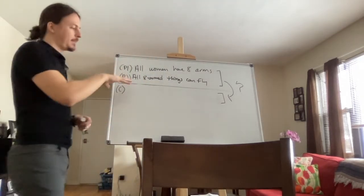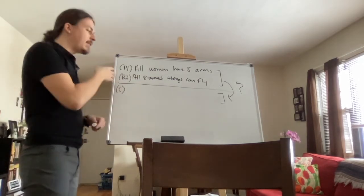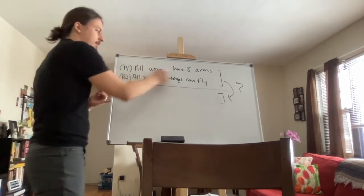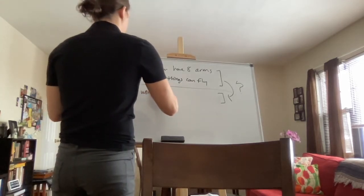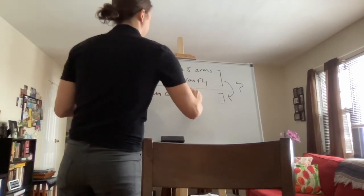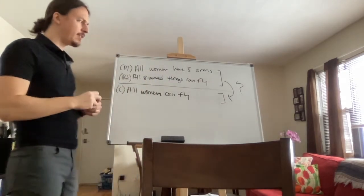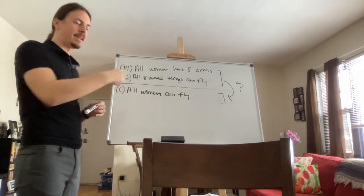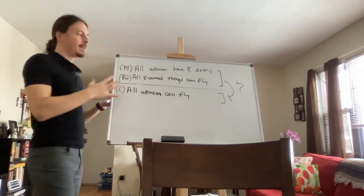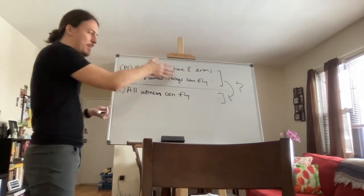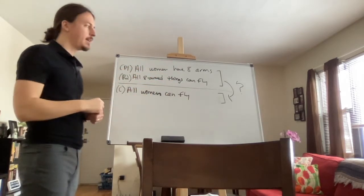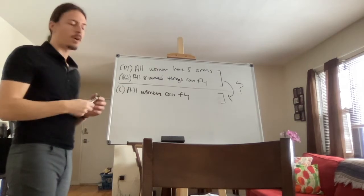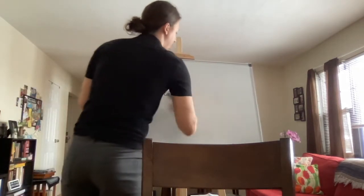All women have eight arms, and all eight-armed things can fly — if these premises were true, what conclusion would necessarily follow? You connect the terms and get: therefore, all women can fly. That sounds weird, and there's a reason — but it's separate from the last question we asked. If you look at this objectively, you'd have to say the premises do support the conclusion. But you're still troubled because you're wondering: are the premises actually true? That's the second quality.